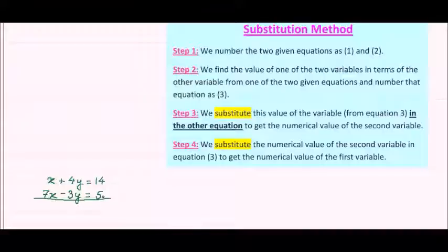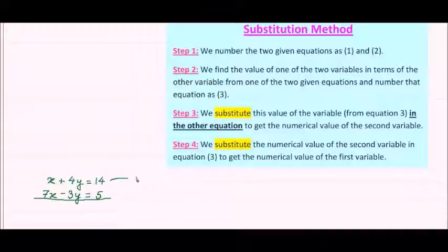Now let us see how the substitution method works. Step number one is we number the two given equations as equation 1 and equation 2. So let us number them: x plus 4y equal to 14 is equation 1, and 7x minus 3y equal to 5 is equation 2.